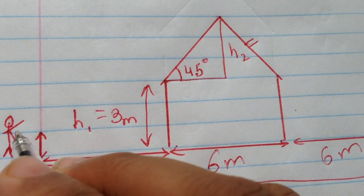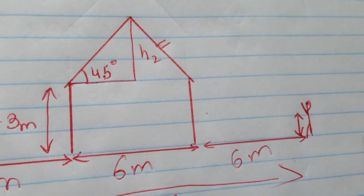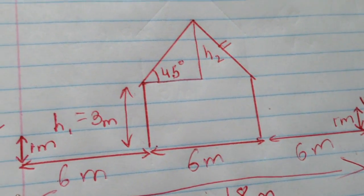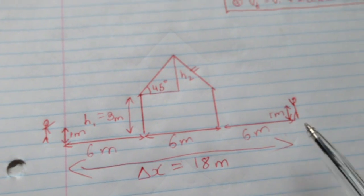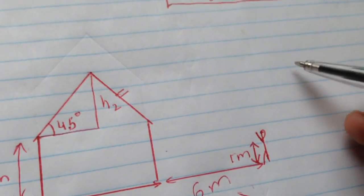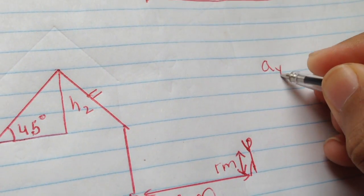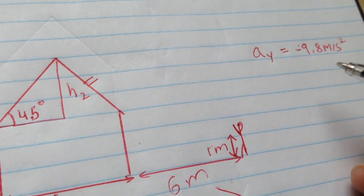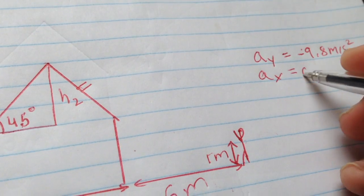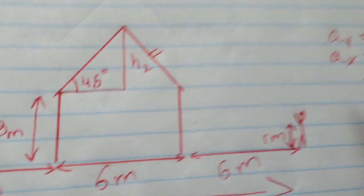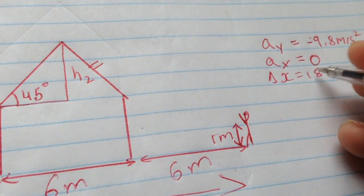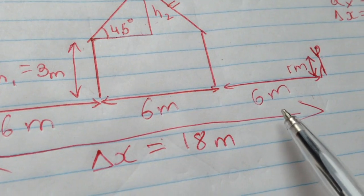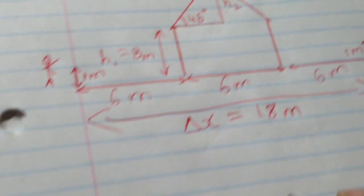Another thing they mention is that the player throws the ball from 1 meter above the ground and the other player catches the ball exactly 1 meter above the ground. This detail is going to play an important part in solving the question, but we'll come back to that later. First, our unknowns: the acceleration in the y direction is negative 9.8 m/s², the acceleration in the x direction is zero, delta x is 18 meters, and we have to calculate h2 to get the delta y value at maximum height.